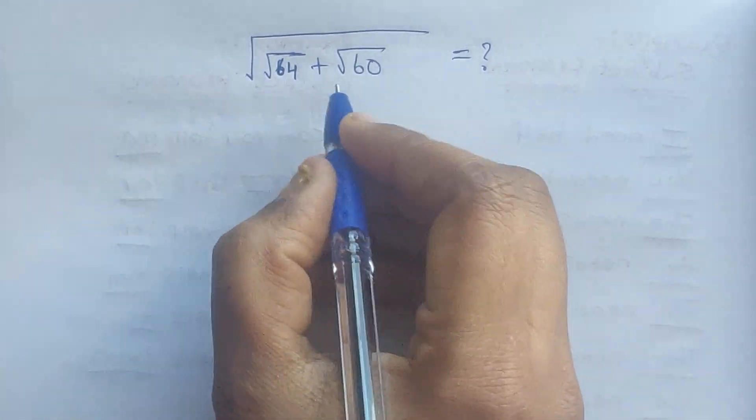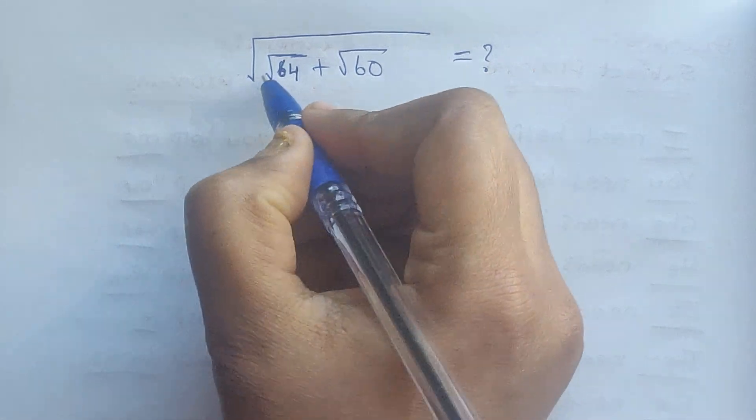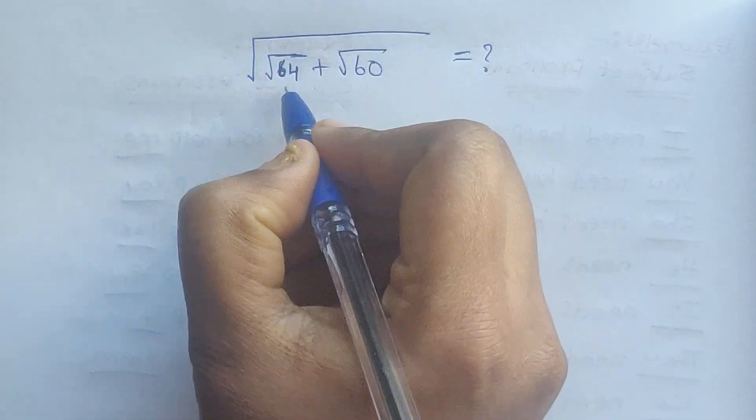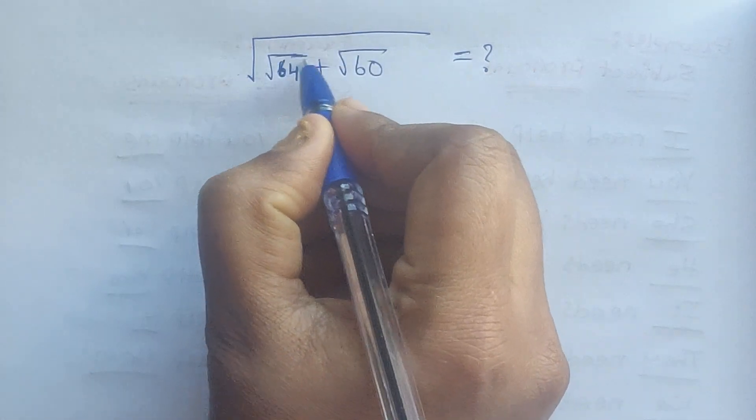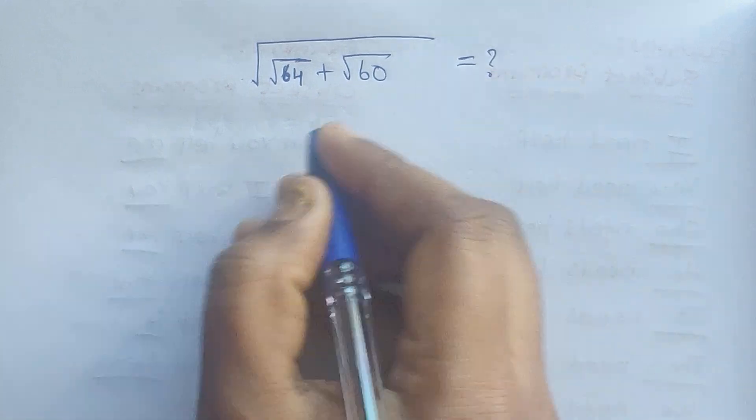Hello everyone, welcome back to my channel. Here we have one problem: square root of 64 plus square root of 60.